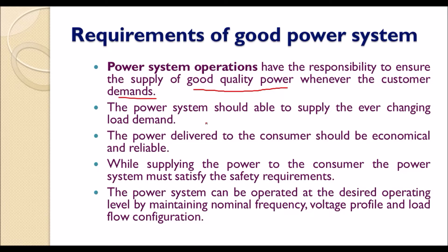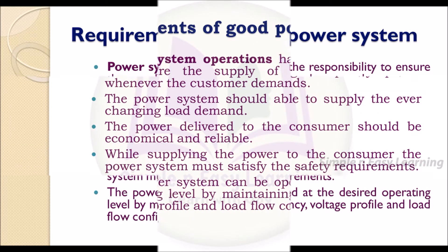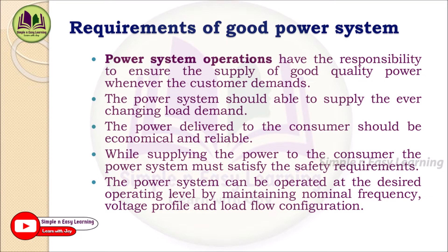Whatever the customer demands, we need to supply to that load demand. During the summer season, for example, switching on all air conditioning units increases reactive power requirements, and that power demand must be supplied with quality by the utility company. The power system should be able to supply an ever-changing load demand — for example, 100 megawatts from 8 to 9 o'clock may change from 9 to 10, and further vary into the afternoon.